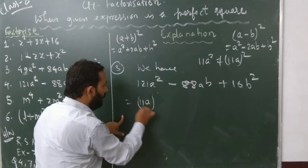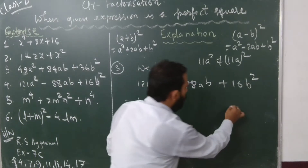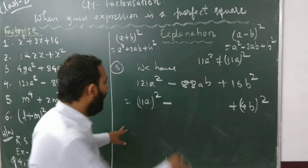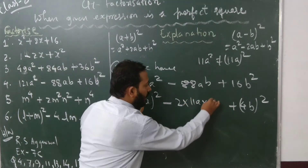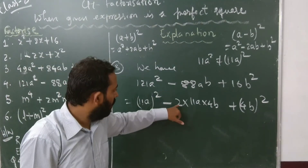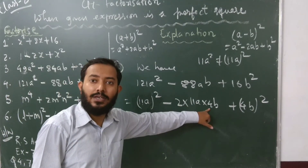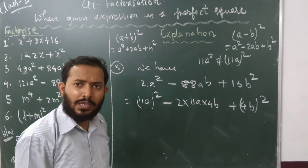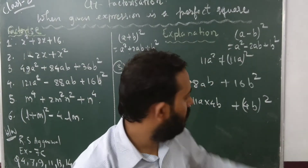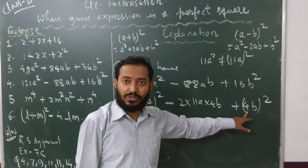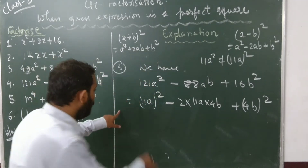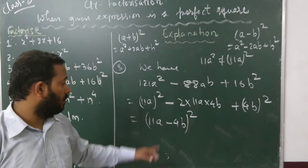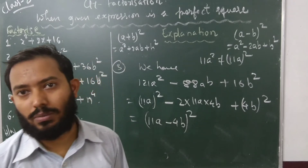So here a = 11a and b = 4b. According to the formula we need 2ab in the middle: 2 × 11 × 4 = 88, and a×b gives ab, so the middle term is 88ab — and indeed there is an 88ab in the expression. So the expression fits the a² - 2ab + b² pattern and can be written as (11a - 4b)², or equivalently (4b - 11a)². Both are equal.